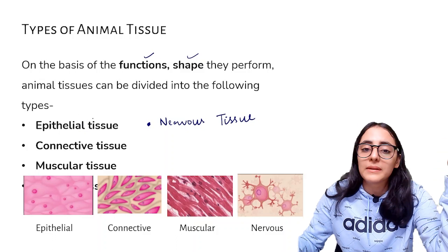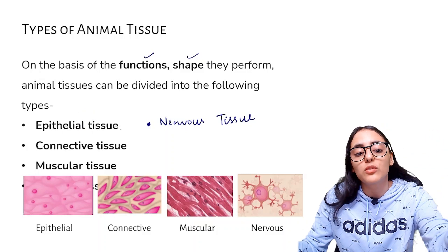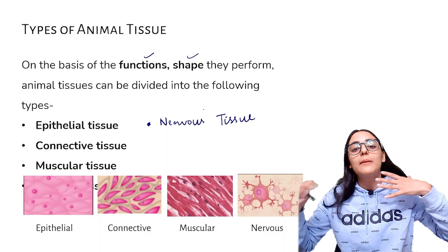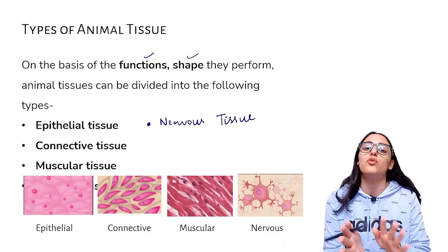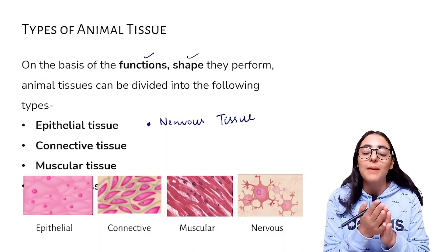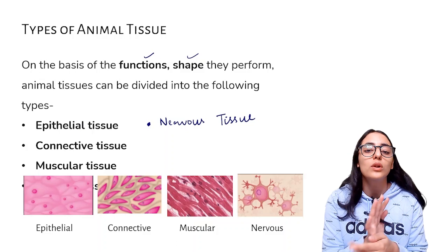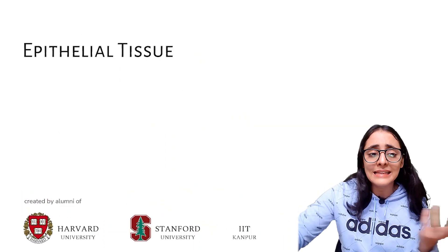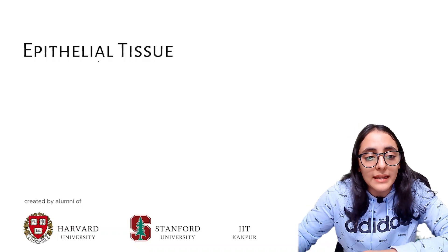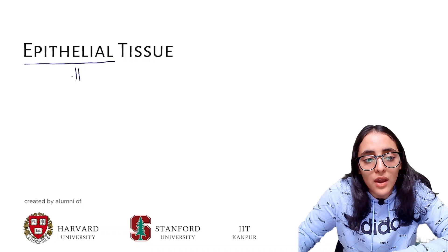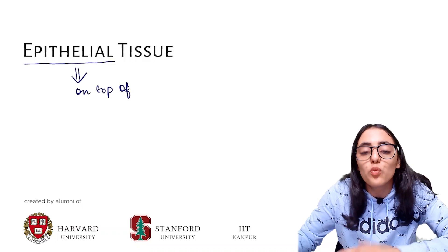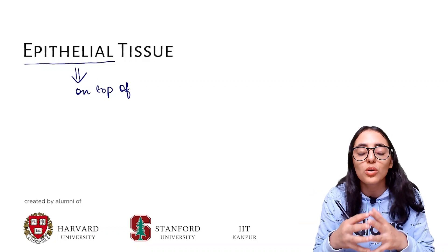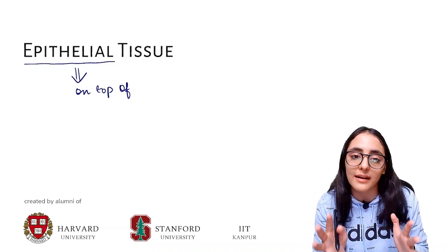Let's start with epithelial tissue. Animals are very complex organisms, but broadly there are only four types of tissues in the body. Under each division there are subtypes. The epithelial word basically means 'on top of' — if there is something covering type of thing, it is epithelial.